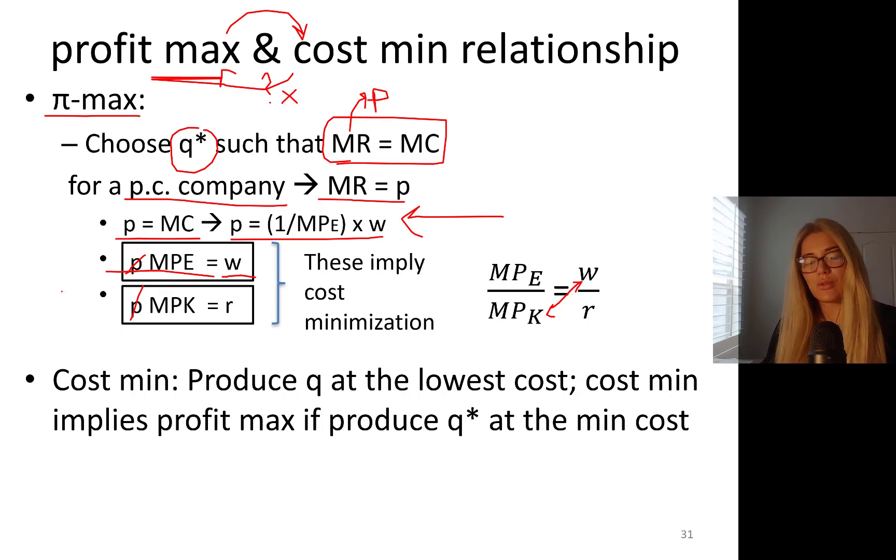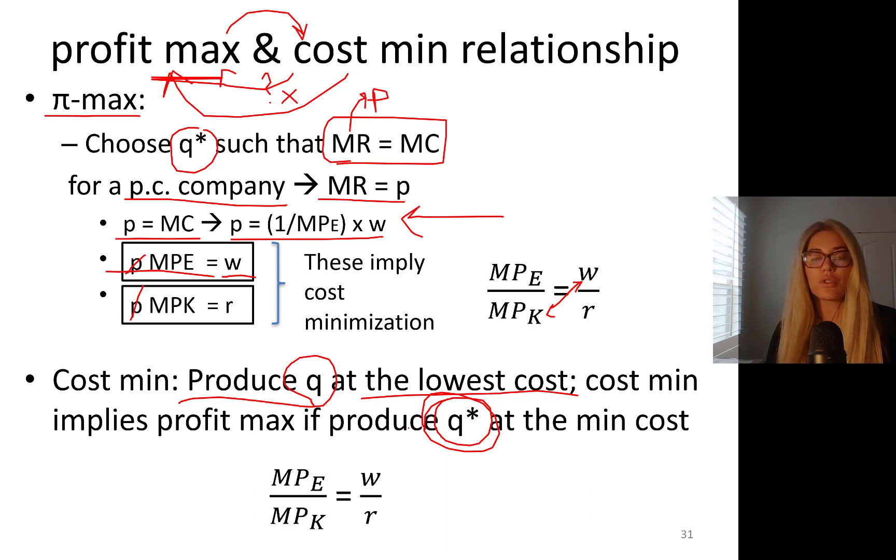Let's talk about cost minimization a little bit. Cost minimization is all about producing an arbitrary level of output at the lowest cost. Cost minimization will imply profit maximization if that output level we're trying to produce is indeed q*.